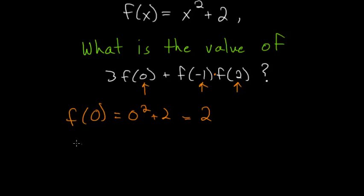And plugging in negative 1 into our function, we get negative 1 squared plus 2. Negative 1 squared, or negative 1 times negative 1, is just 1. So 1 plus 2 is 3.